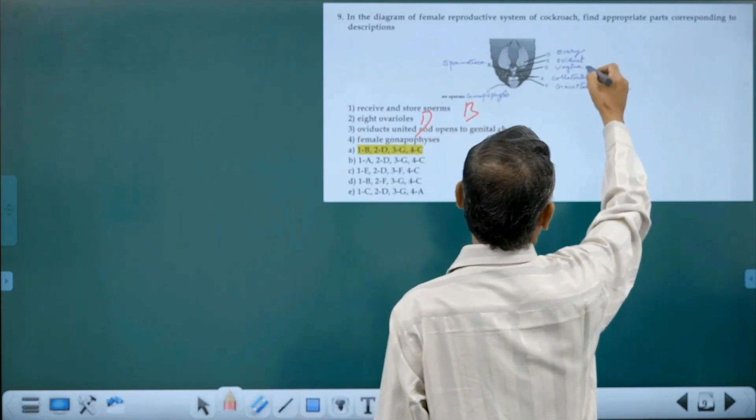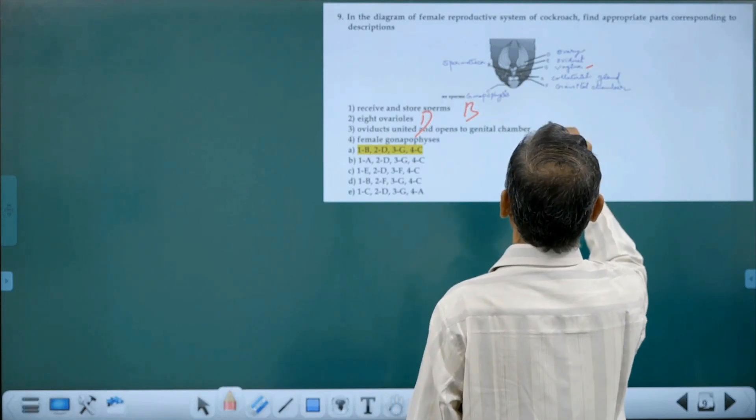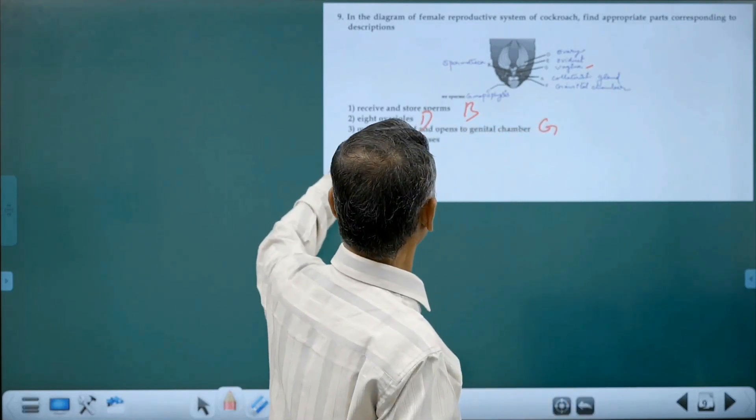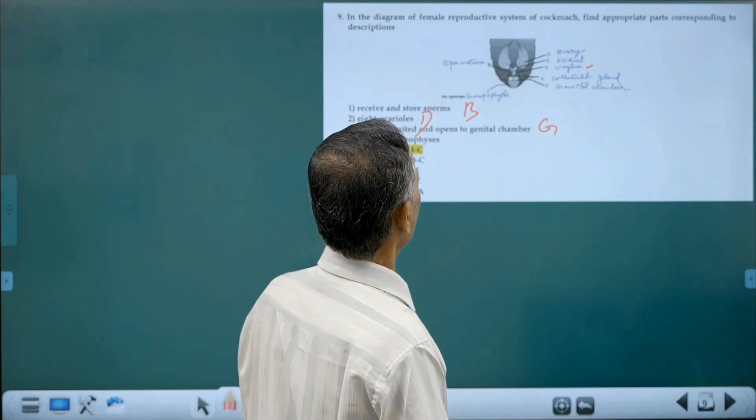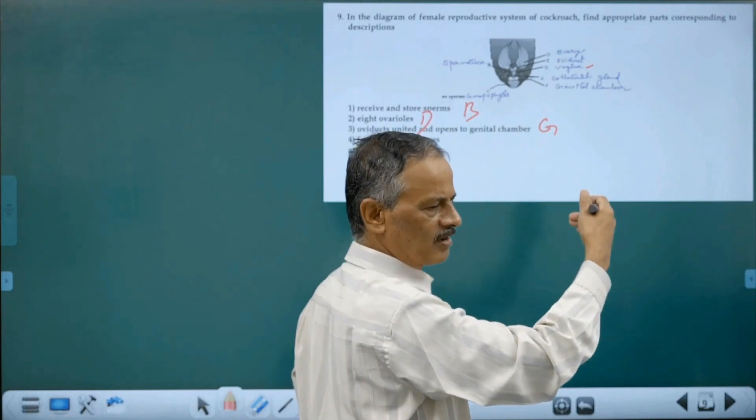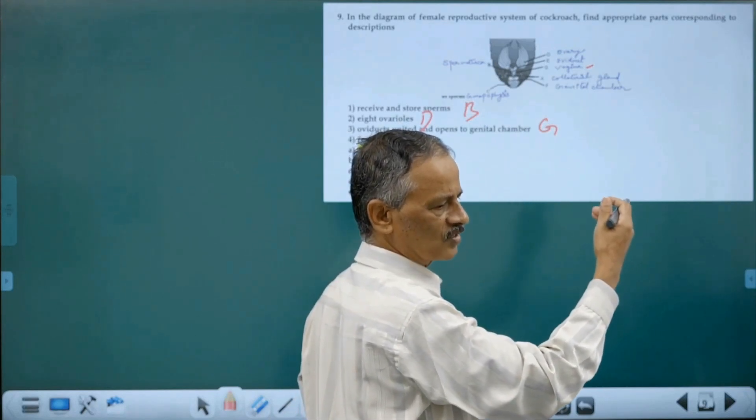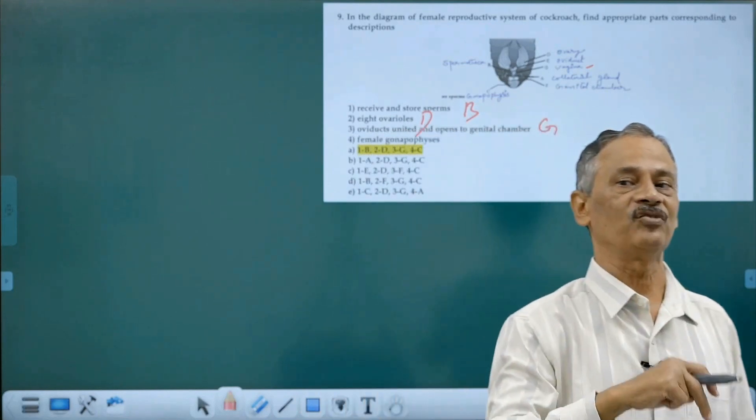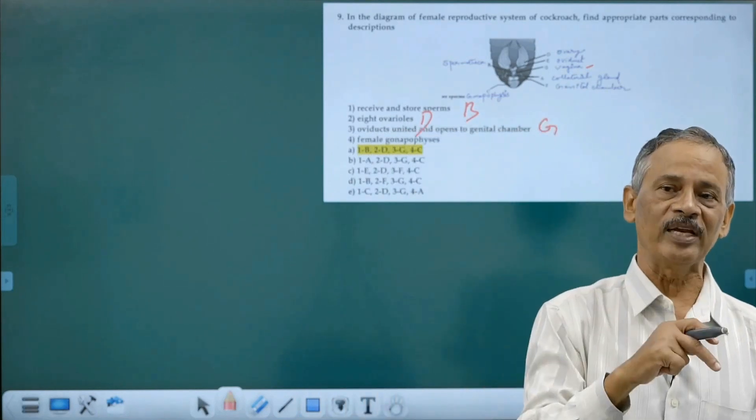Then oviducts united at opposite to the genital chamber as a common vagina. This is the common vagina that is marked as G. And the fourth question is female gonapophysis. What is gonapophysis? The external visible genitalia - that's called gonapophysis. In males, the external genitalia is phallomere, three irregular chitinous plates called phallomere.